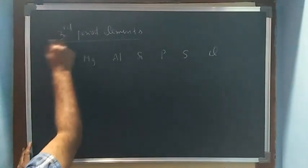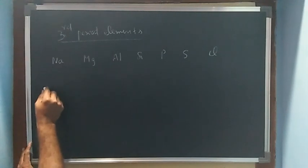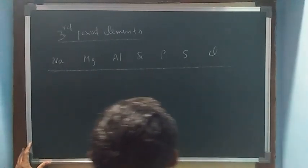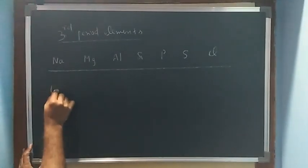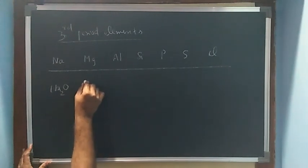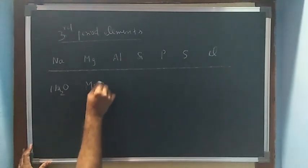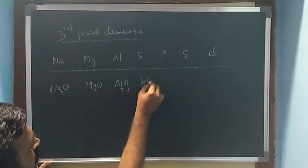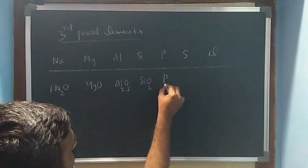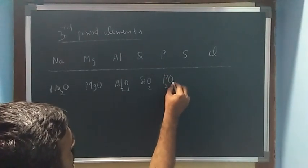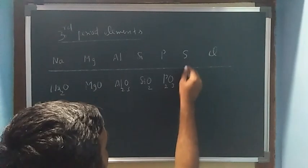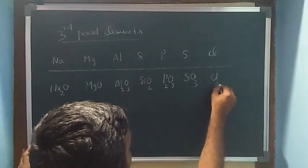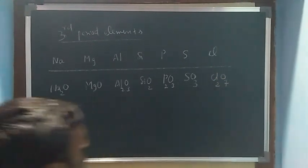If you ask anything regarding the oxides of third period elements: sodium forms oxide Na2O, magnesium forms MgO, aluminum oxide is Al2O3, silicon oxide is SiO2, phosphorus oxide is P2O3, phosphorus pentoxide, sulfur oxide is sulfur trioxide, chlorine oxide is Cl2O3.